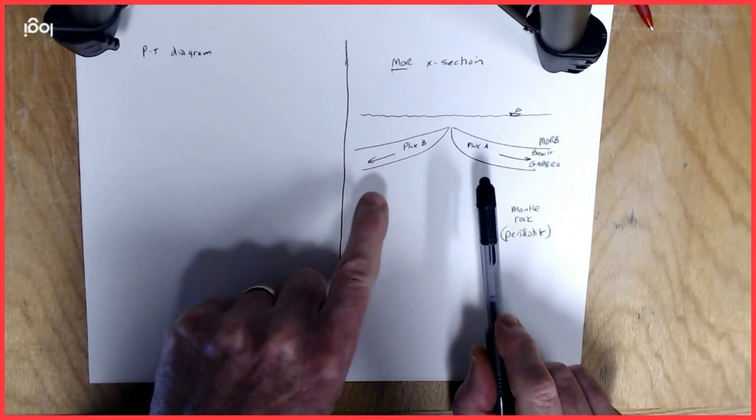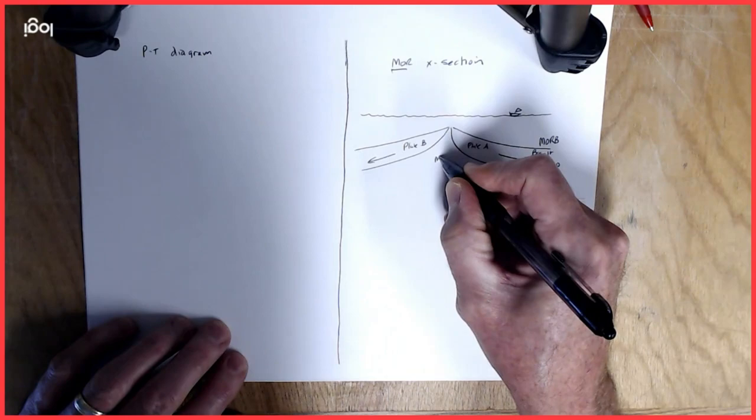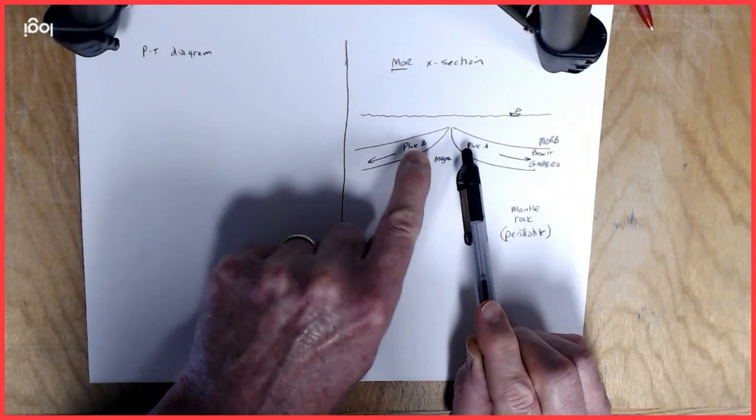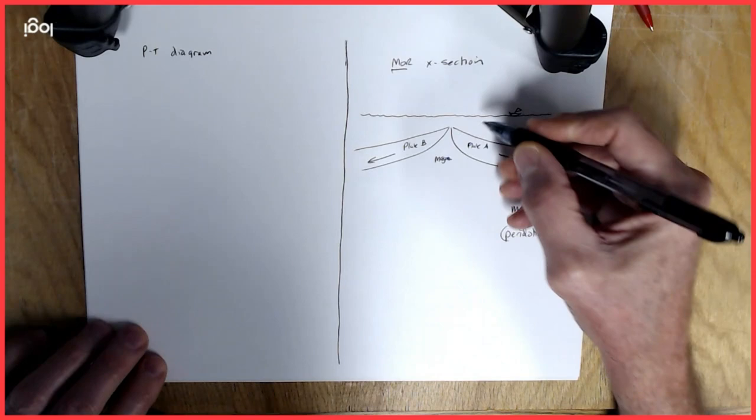So in this environment we've got two plates that are being created. We have magma that's coming up somewhere in here, and that's cooling and crystallizing as two different plates, and it's an ongoing process, and these plates are diverging away from each other.